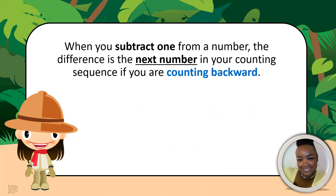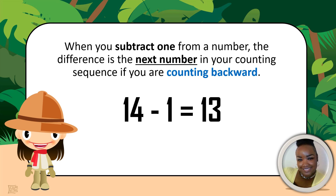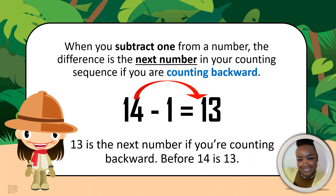When you subtract 1 from a number, the difference is the next number in your counting sequence if you are counting backwards. Here's an example: 14 take away 1 equals 13. 13 is the next number if you are counting backwards. Before 14 is 13. So when you take away 1, you are actually taking 1 step backward. Here are some more examples.